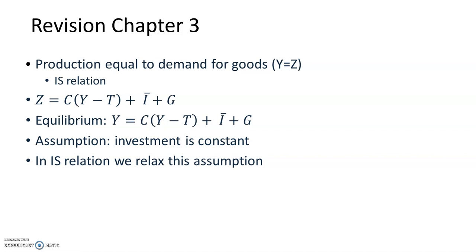Let's first summarize what we learned in Chapter 3. We characterized equilibrium in the goods market as the condition that production Y be equal to the demand for goods Z. We call this condition the IS relation. We define demand as the sum of consumption, investment, and government spending.